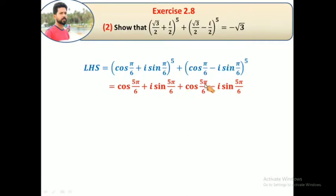This becomes (cos(π/6) + i sin(π/6))^5 plus (cos(π/6) - i sin(π/6))^5 equals cos(5π/6) + i sin(5π/6) plus cos(5π/6) - i sin(5π/6). Here π is 180 degrees, so 180/6 gives 30 degrees, 30 times 5 is 150 degrees. So 150 degrees we can write as 180 minus 30.